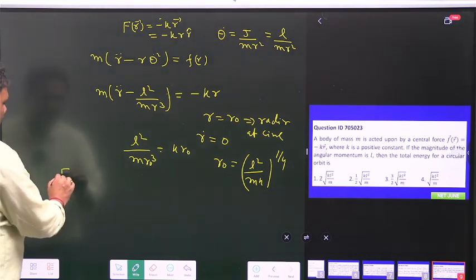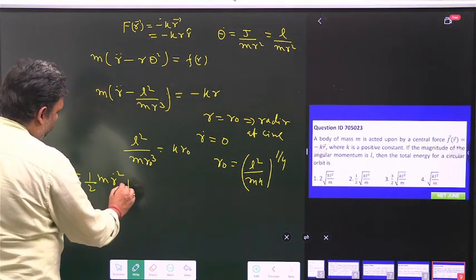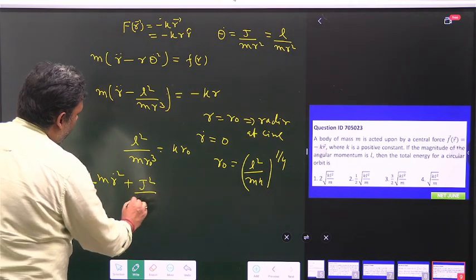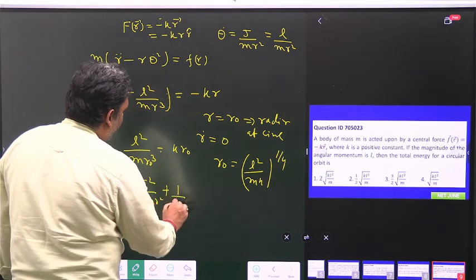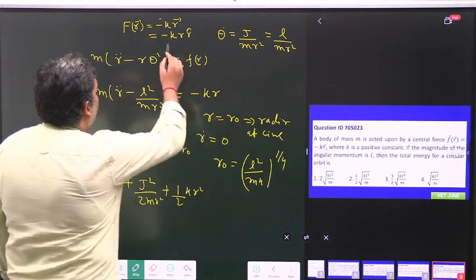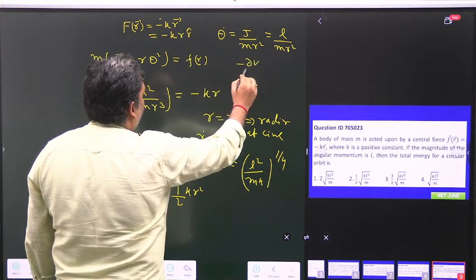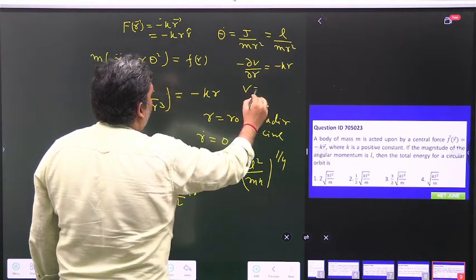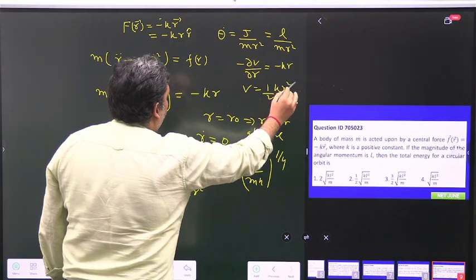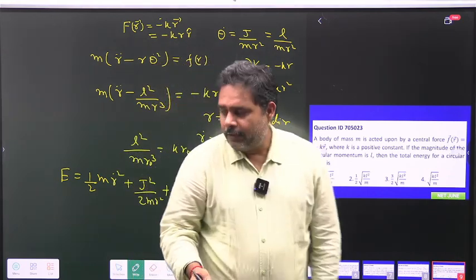The total energy E can be written as half m r dot square plus j square upon 2 m r square plus half kr square. So if this is your force, then minus del V upon del r is equal to minus kr, so V is equal to half kr square.